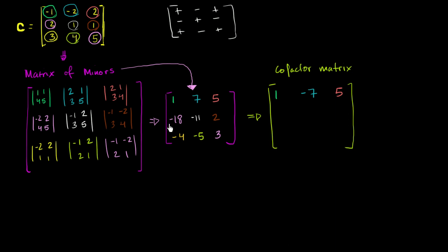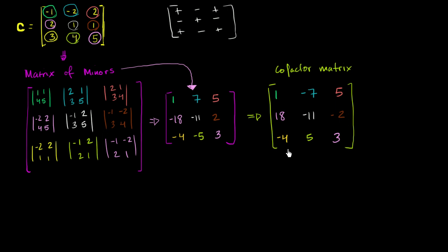Continuing: negative 4 times positive stays negative 4; negative 5 times negative gives positive 5; and positive 3 times positive stays positive 3. So we've completed our cofactor matrix. Now we just take 1 over the determinant, multiply it by this cofactor matrix, and we've found the inverse of matrix C.